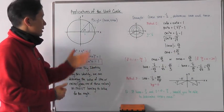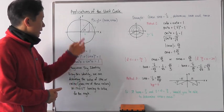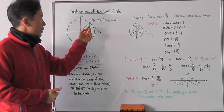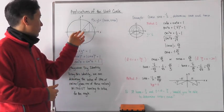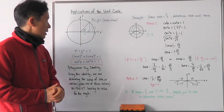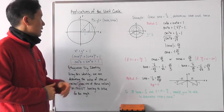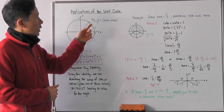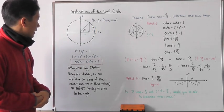Hello everyone, let's go ahead and take a look at applications of the unit circle. So here we have our unit circle, and we said that if we draw a right triangle such that the hypotenuse is going to be the radius of the unit circle, then we can come up with some very nice associations with any point on the unit circle, which is x, y — or cosine theta and sine theta.